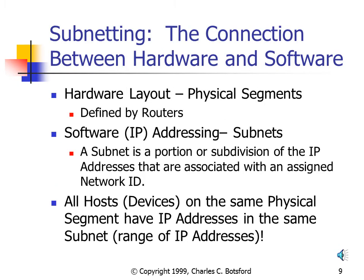When addressing our IP networks, we have to be aware of the connection between hardware and software. Hardware refers to the physical segments, which are defined by routers — all devices out one port of a router, or all devices between two routers. The software is the IP addressing and the subnets. The payoff is that all hosts on the same physical segment must have IP addresses in the same subnet.